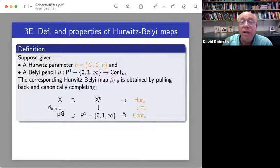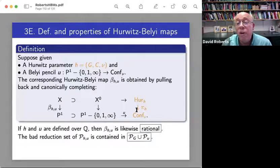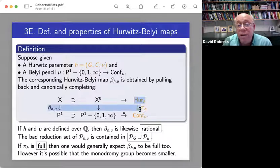But if you're only interested in Belyi maps, then this is too big for you. And so to make it really a Belyi map, you have to complete. So it's a complete curve. So that's the Belyi map. It depends on a choice of Hurwitz cover and a choice of Belyi pencil.